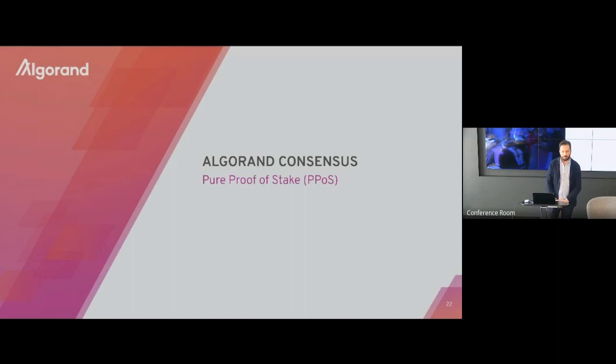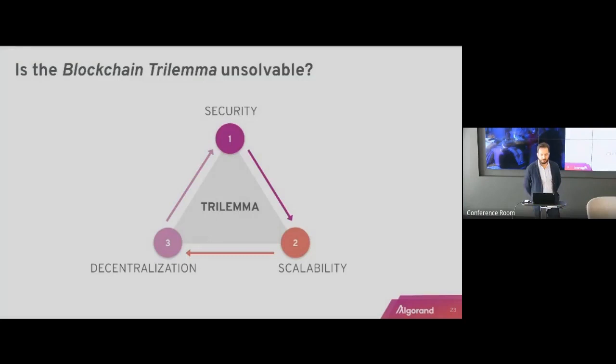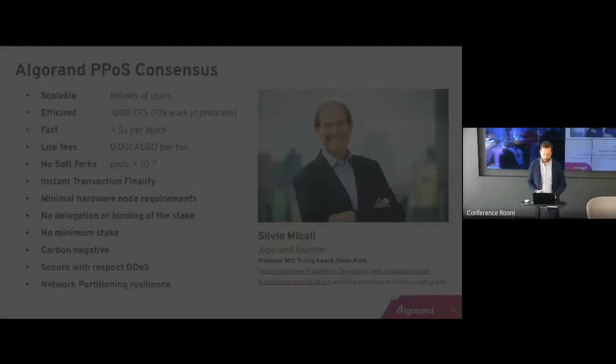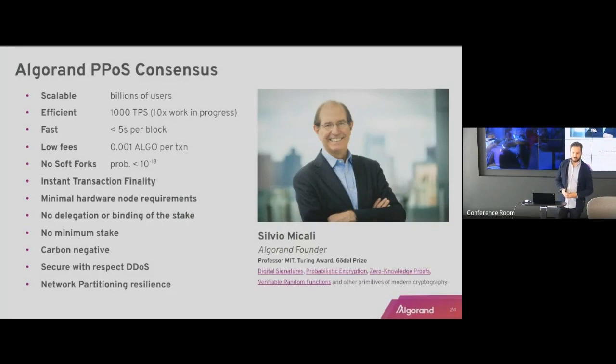That's why we are here to discuss the Algorand consensus — the consensus that solves the trilemma for blockchain infrastructure. Replacing those concepts, you discover that this infrastructure, to be useful, needs to be secure, scalable, and decentralized at the same time. We believe our technology can achieve all three.